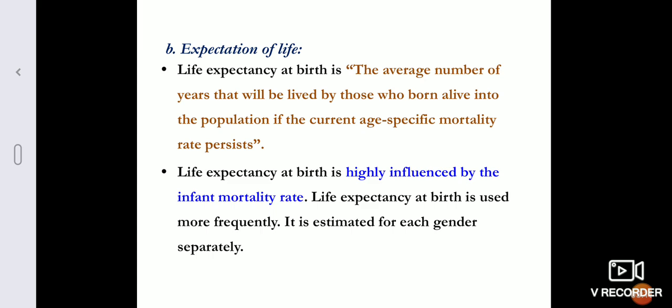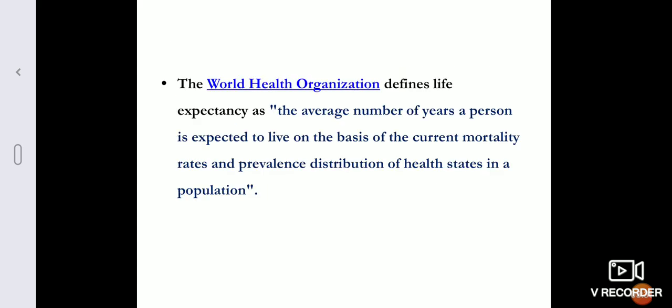Life expectancy at birth is highly influenced by the infant mortality rate and is used more frequently because it is estimated for each gender separately, like male and female. The World Health Organization defines life expectancy as the number of years a person is expected to live on the basis of current mortality rates and prevalence distribution of health states in a population.